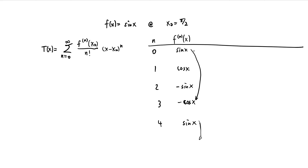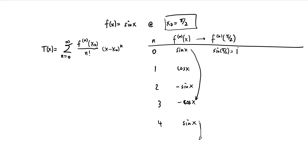Now we need to plug in the center point into our derivative function. We've got our formula, but we need to evaluate it at pi over two. A lot of previous examples used the Maclaurin series where x naught is zero, but here the center point is pi over two. So sine of pi over two equals one. Then cosine of pi over two equals zero. Next, negative sine of pi over two: since sine of pi over two is one, the negative of that is negative one.